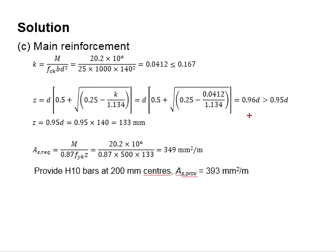And it is found that the lever arm is 0.96d, which is greater than 0.95d. A maximum of 0.95d is allowed. Therefore, you use z equals to 0.95d and the lever arm is found to be 133 mm.